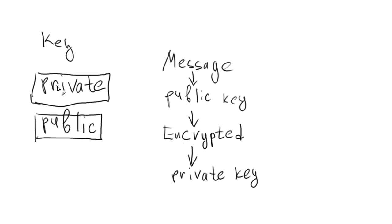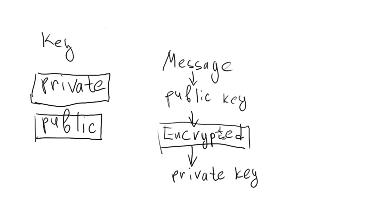Here's how it works for privacy: I generate a private key and a public key. I send my public key to my friend and everyone else — it's public, anybody can see it. If my friend wants to send me a private message, they use my public key to encrypt it. They send the encrypted message normally, like attached to an email. Nobody can decrypt it except me, because only I have my private key, which I keep very secure and don't share with anybody.